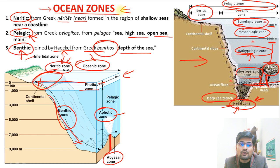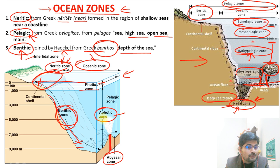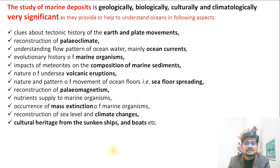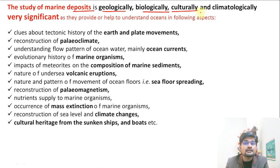The deposits made at these particular places are known by the same names. So you have benthic deposits, neritic deposits, pelagic deposits, and abyssal deposits — all important in terms of the deposition of unconsolidated sediments. The study of these marine deposits is significant geologically, biologically, culturally, and climatologically — remember these four components.